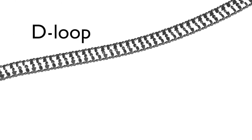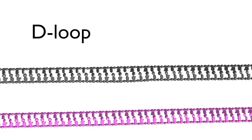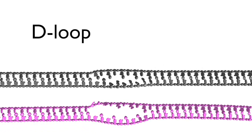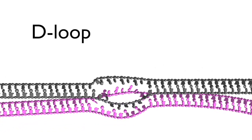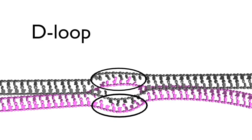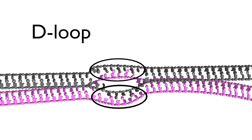The formation of a Holliday junction is initiated by the formation of a D-loop between homologous duplexes, in which a strand from one duplex, shown here in grey, invades the other duplex, shown in pink. Regions of heteroduplex DNA are formed in which complementary strands from the two different duplexes are paired.